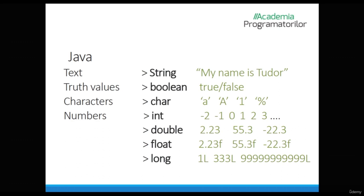They can be integers of type int — for example, minus 2, minus 1, 0, 1, 2, 3. We can also have double numbers, which are written with a dot, for example 2.32 or 55.3. Float numbers are also used to encapsulate fraction values, but it is mandatory to write the letter F at the end of the value. Long numbers can encapsulate larger values and the letter L must be specified at the end. Any int type number can have values from minus 2,147 million to plus 2,147 million. If we want a larger number, we'll have to use the long data type.